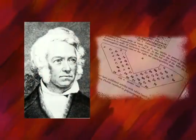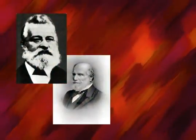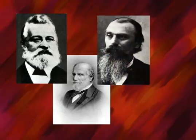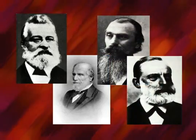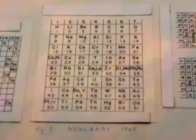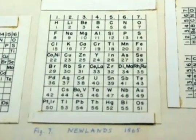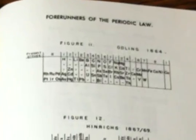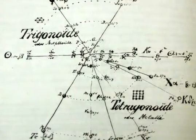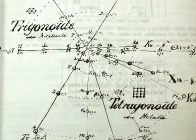Others, such as Leopold Gemellin in 1843, and John Newlands, William Odling, Gustavus Hendricks, and Lothar Meyer in the 1860s, also tried various charts for organizing the elements, some of which were fairly successful.